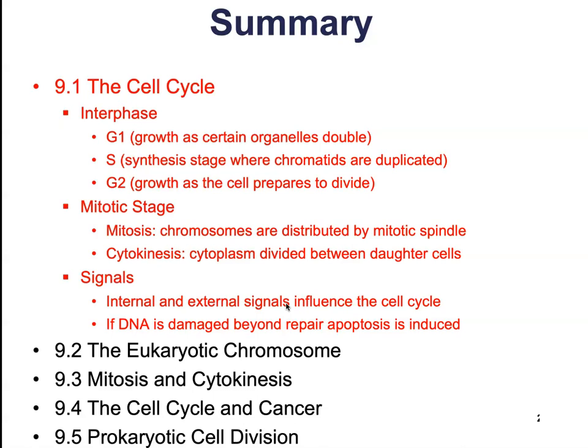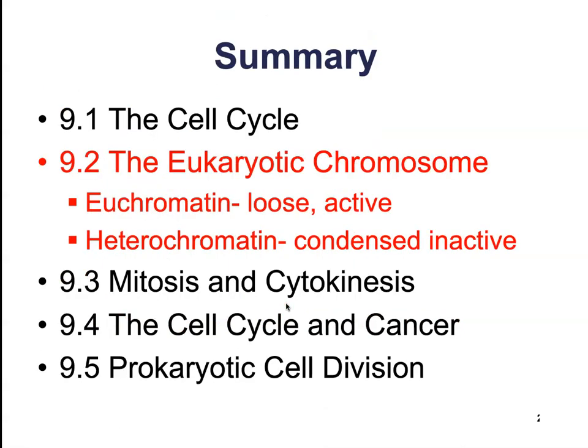This is all regulated by internal and external signals that influence the cell cycle. If the DNA is damaged beyond repair, we undergo apoptosis. Apoptosis is regulated cell death — it is intentional and a very important part of the cell cycle.